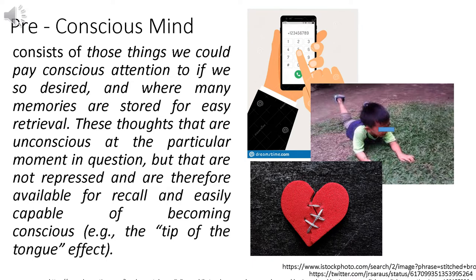Another example is a cellphone number. When you don't need it, it's not on your mind. But the moment you need it, it suddenly pops out. Also included in the pre-conscious mind are everyday experiences that have very little significance to us — for example, when you trip and fall, you know it will hurt without having to think about it. Or when you taste sugar, you already know it's sweet. Those are the things stored in our pre-conscious mind.